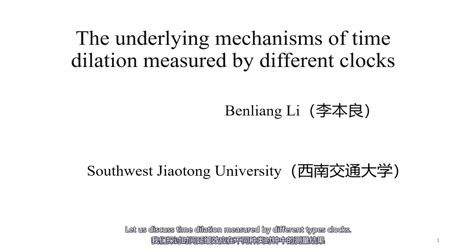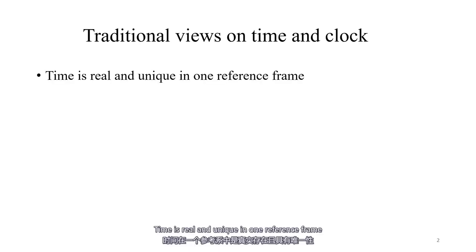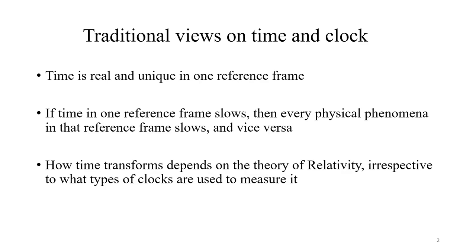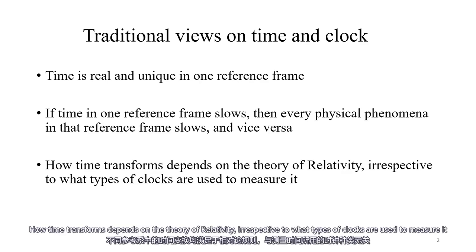Hello, let's discuss time dilation measured by different types of clocks. This is the traditional view of time and clocks. Time is real and unique in one reference frame. If time in one reference frame slows, then every physical phenomenon in that reference frame slows, and vice versa. How time transforms depends on the theory of relativity, irrespective of what types of clocks are used to measure it.